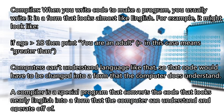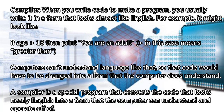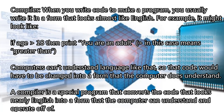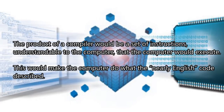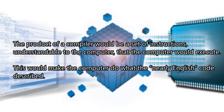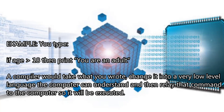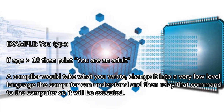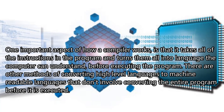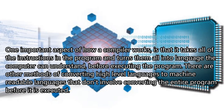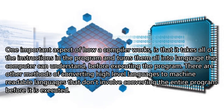Compiler — when you write code to make a program, you usually write it in a form that looks almost like English, for example: 'if age greater than 18, then print you are an adult.' Computers can't understand language like that, so the code would have to be changed into a form the computer does understand. The compiler is a special program that converts nearly-English code into a form the computer can understand and execute. One important aspect of a compiler is that it takes all the instructions in the program and turns them all into machine-readable language before executing the program.